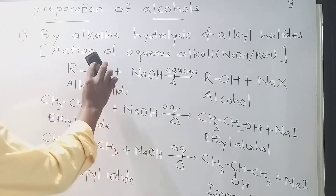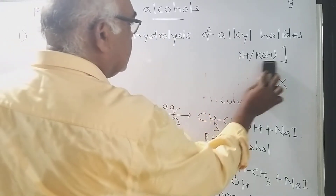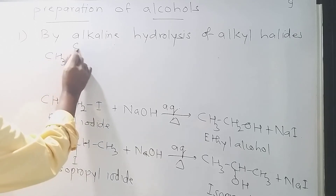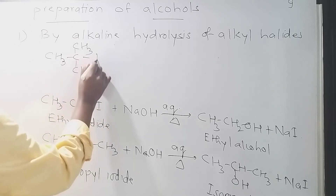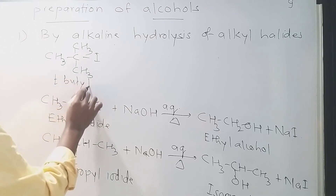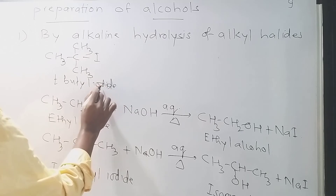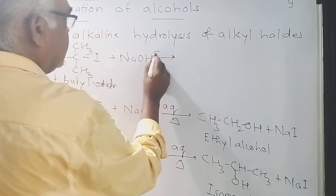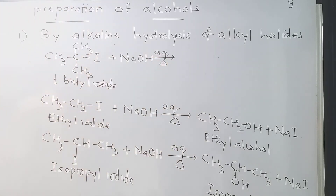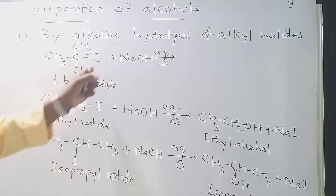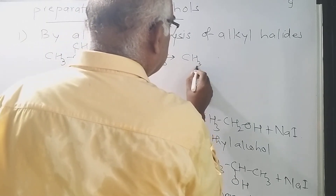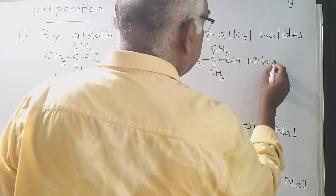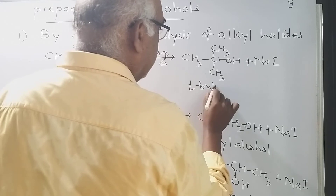Now let's look at a tertiary alkyl halide. If we take tertiary butyl iodide and treat it with aqueous NaOH — again, the word 'aqueous' is important and the heating sign is important — you will get (CH3)3COH plus NaI. So you will get tertiary butyl alcohol.